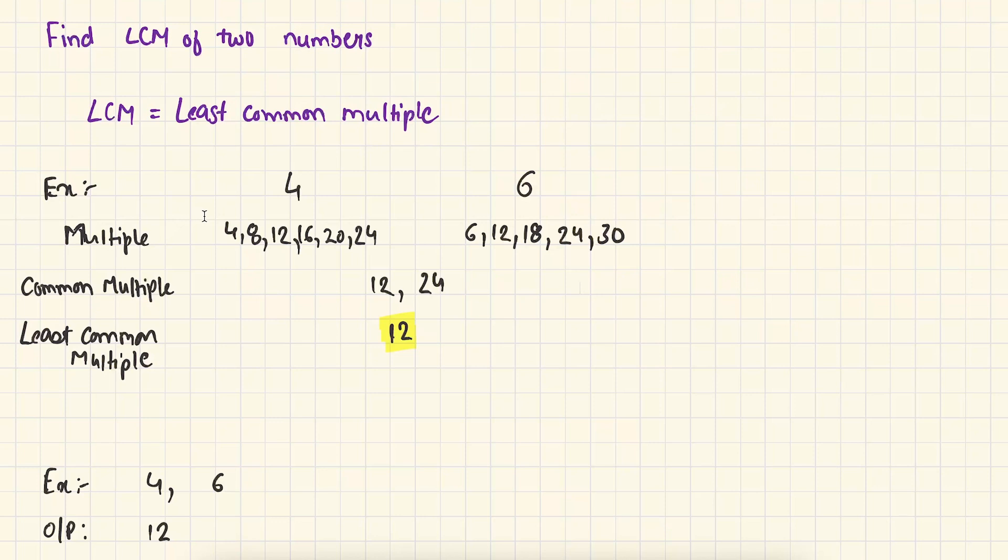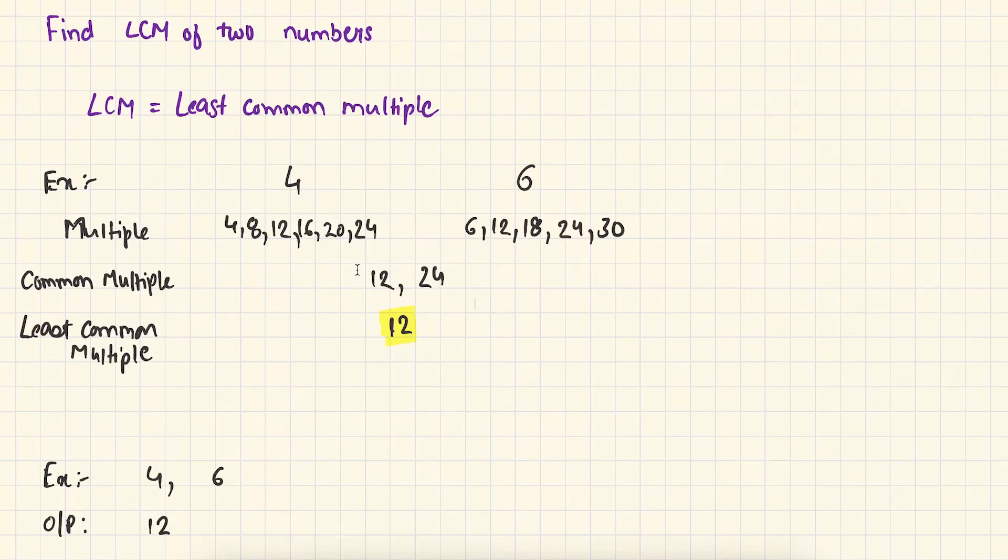Now out of all the multiples there are two common multiples: 12 and 24, because 12 and 24 appear in both the multiples. And out of 12 and 24, 12 is the minimum number. It means 12 is the least common multiple of four and six. It means four divides 12 and six also divides 12.